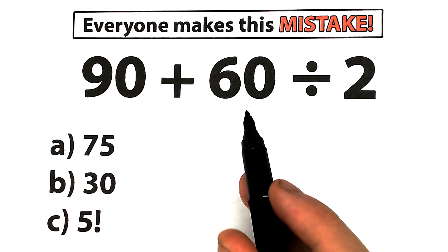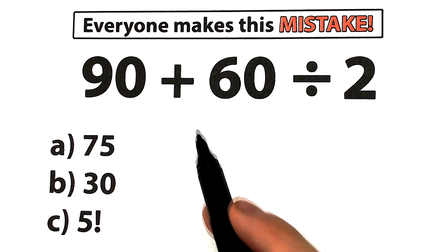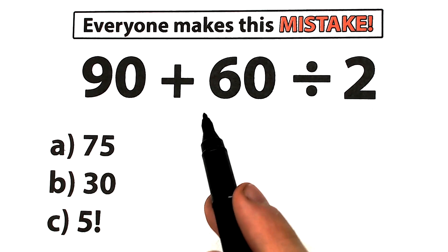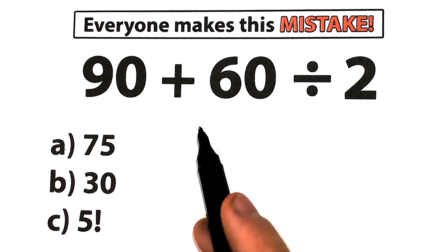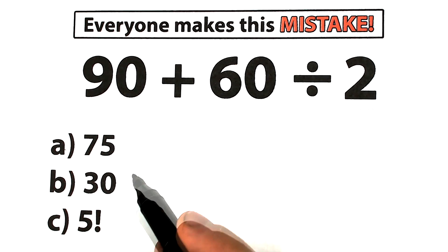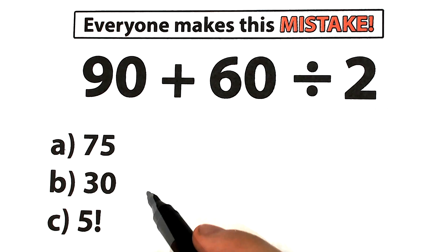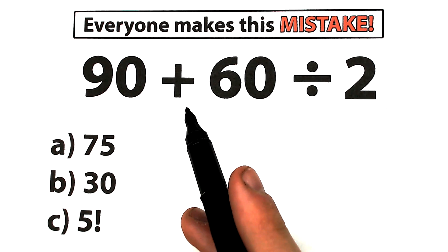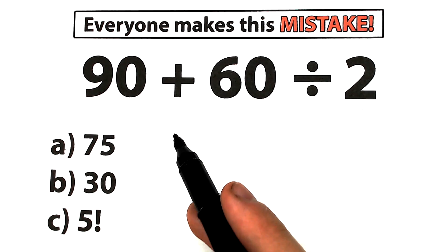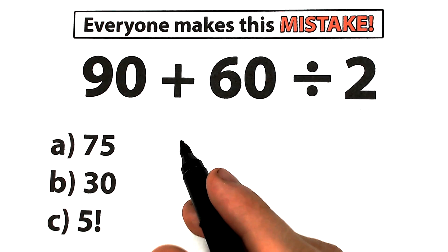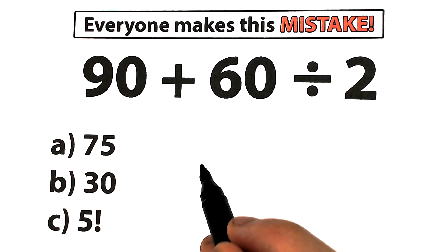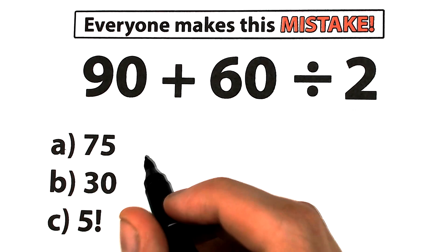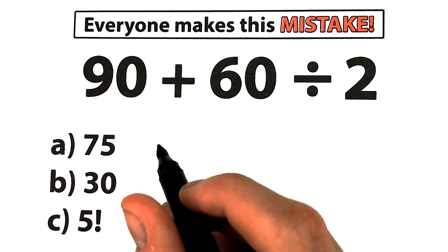So we have 90 plus 60 divided by 2. On the first glance this is the easiest question you've ever seen — we have addition and division, everyone learns this stuff in third grade. Go ahead and put your answer down in the comment section. We have three options — choose one option, what do you think is correct? Let's check our answers in just one minute. Let's use our brain, not our calculators, and write your option down in the comment section.